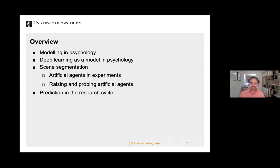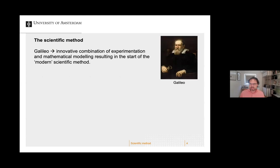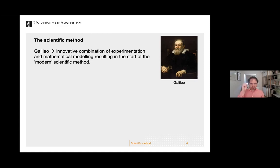Modeling in psychology — the modern scientific method likely started with an innovative combination of experimentation on the one hand and mathematical modeling on the other. The best point to take as the start of the modern scientific method is Galileo basically throwing objects from the Tower of Pisa.